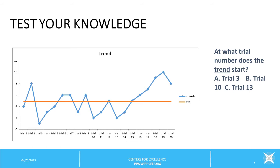Let's review this information by looking at a series of graphs. This first example shows a trend. At what trial number does the trend start? Is it A, trial number 3; B, trial number 10; or C, trial number 13? The answer is C. The trend starts at trial number 13, where you see seven or more data points going in the same direction.